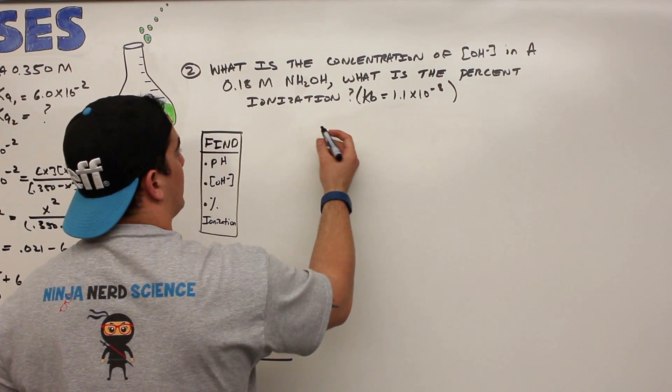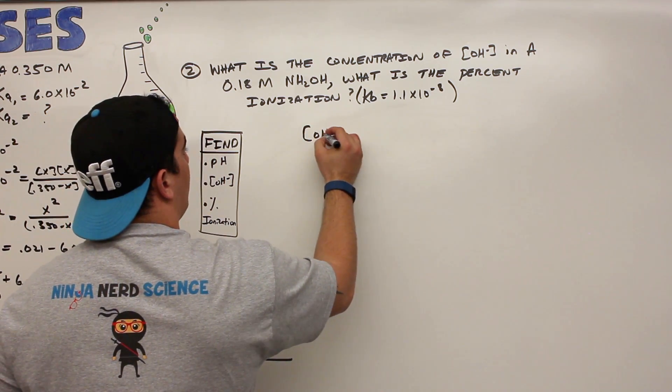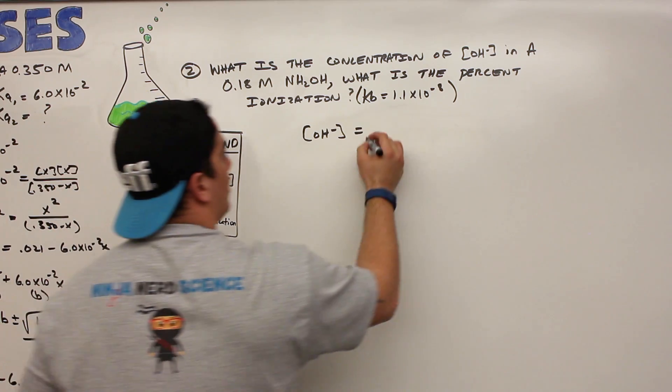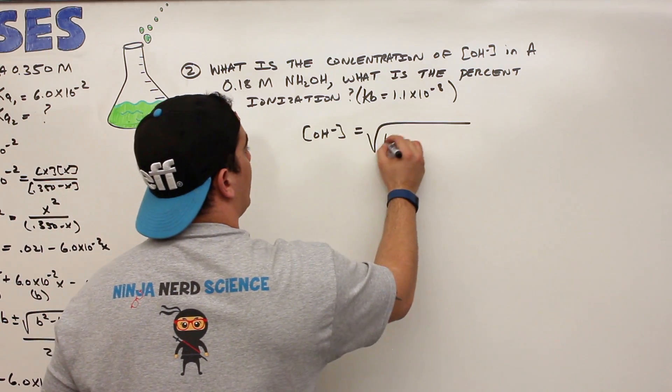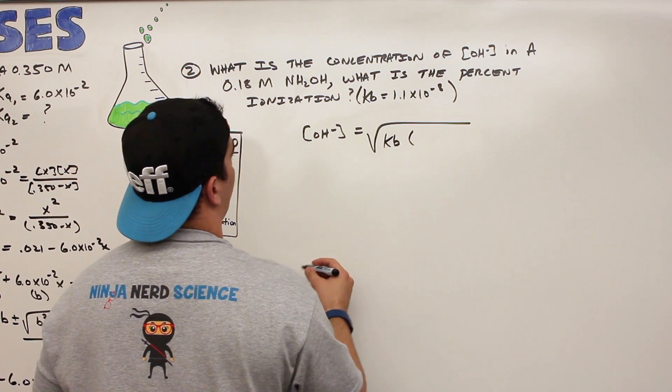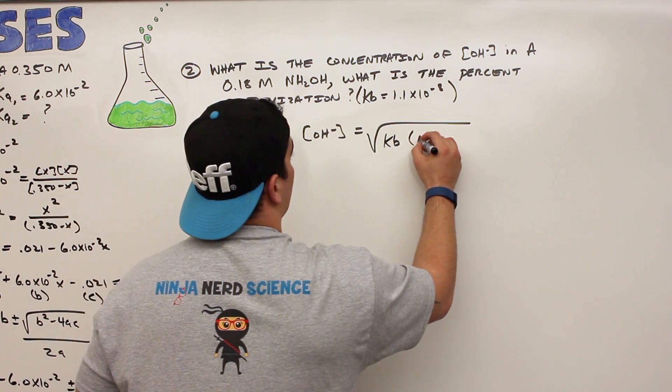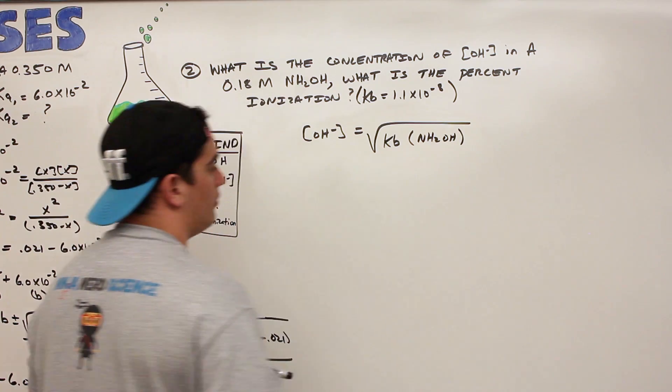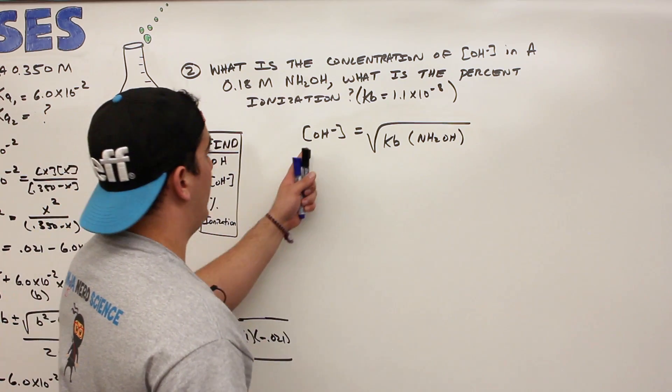And again, what was that trick? It says hydroxide ion concentration is equal to the square root of the Kb times the concentration of the weak base, which in this case is the NH2OH. Let's plug everything in then.